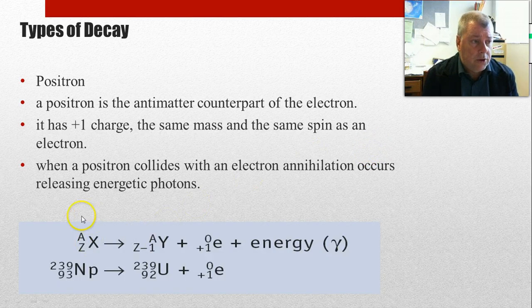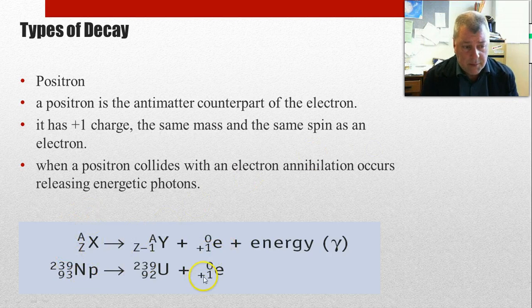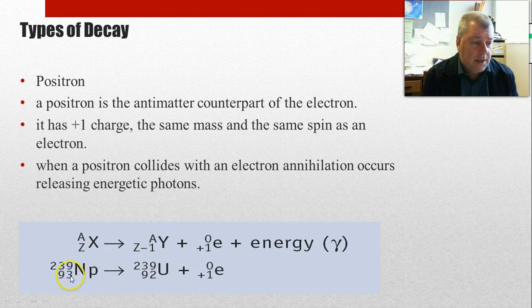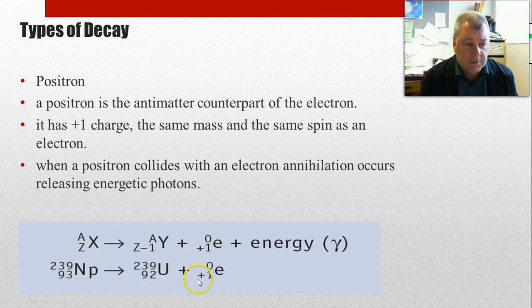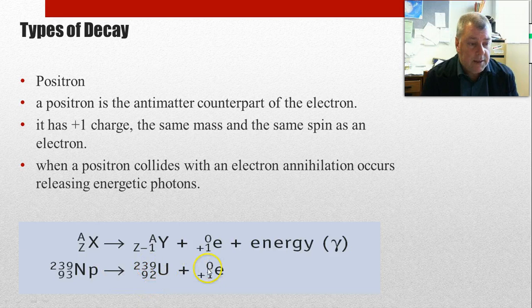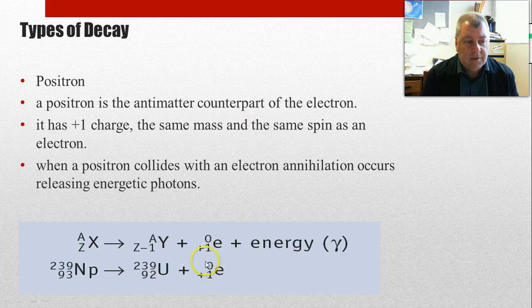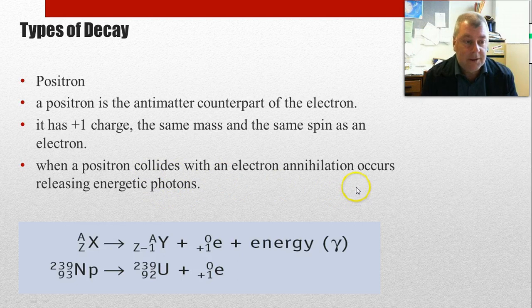And so in positron decay, instead of having a minus one there, we use the symbol for a positron and a plus one. And so what's happening in this case is a proton is becoming a neutron plus a positron. And that's the difference. And so we just need to balance that out. And so in terms of its properties, this is pretty much it. It annihilates pretty quick, interacts with matter very quickly, and you see a little burst of photons. And that's how we know that it's actually happening.